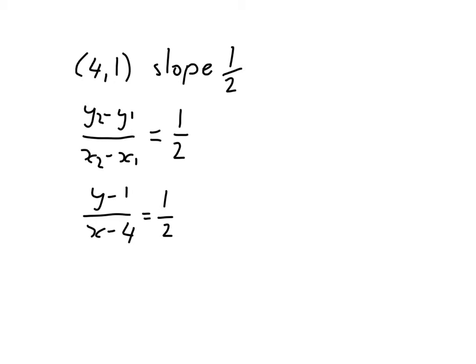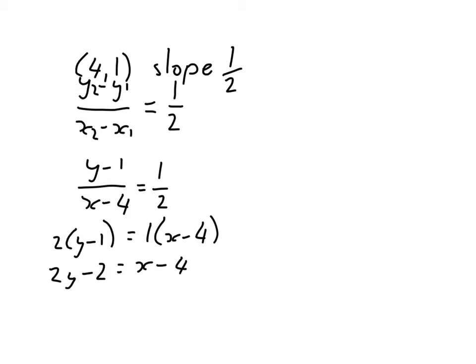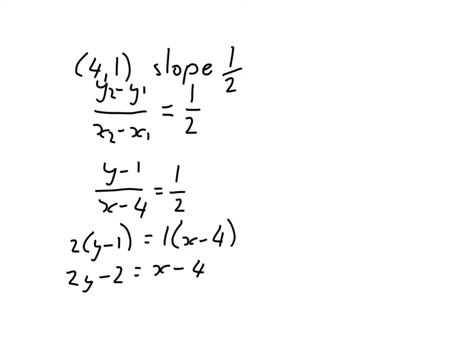Then cross multiply: 2 times y minus 1 equals 1 times x minus 4. Now we expand: we get 2y minus 2 equals x minus 4. Now when we continue on with this, we get it in general form.